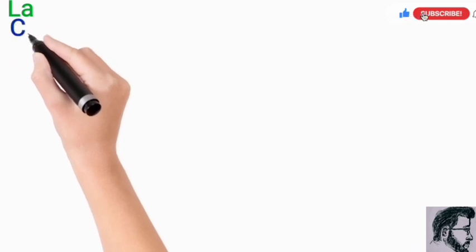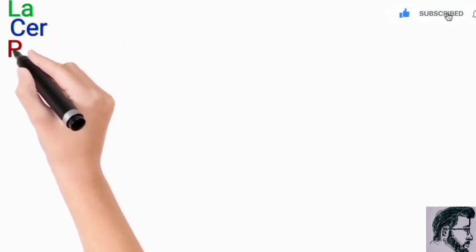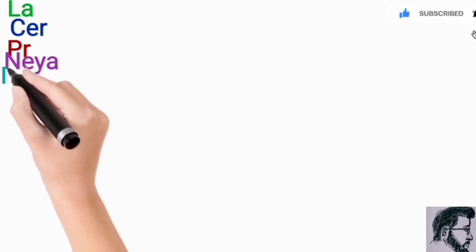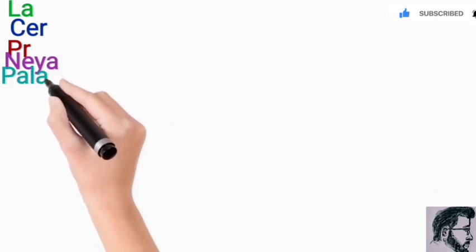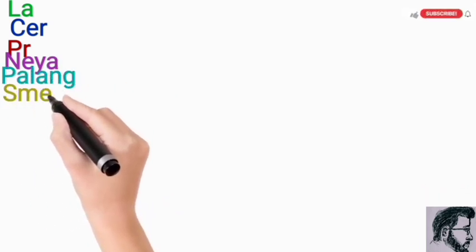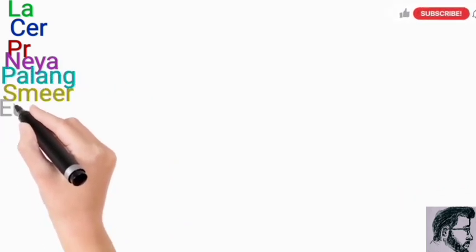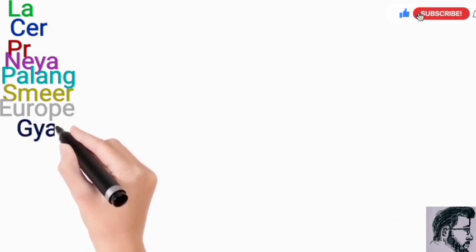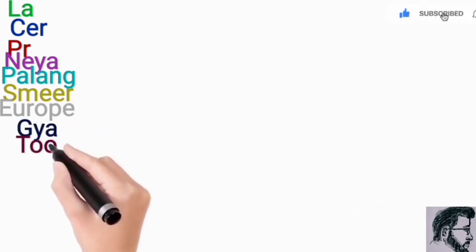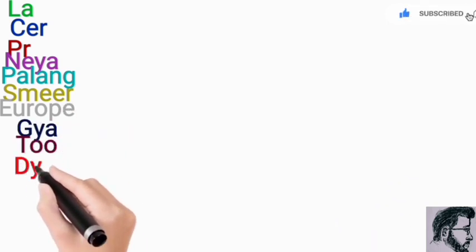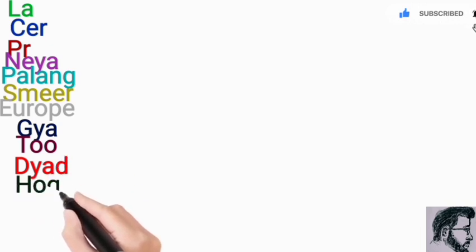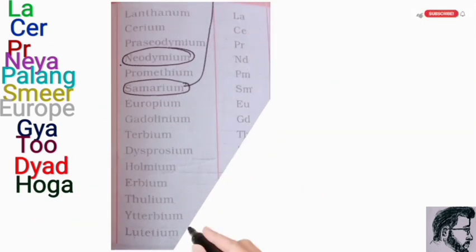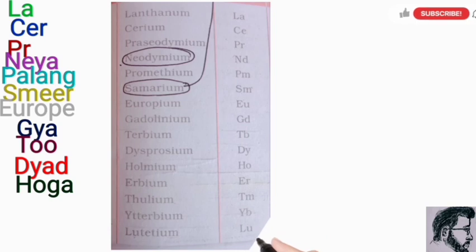Now for the trick — I will tell you that each respective word written in descending order represents the respective member of the lanthanoid series. The mnemonic is: Le, sir, par, naya, palang, samir, Europe, gaya, toh, dead, ho ga, udher, in, tum ya, blue.